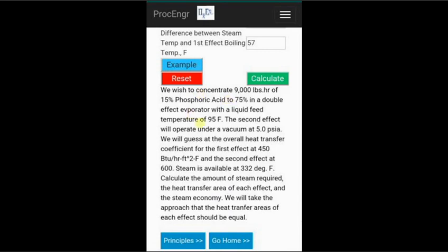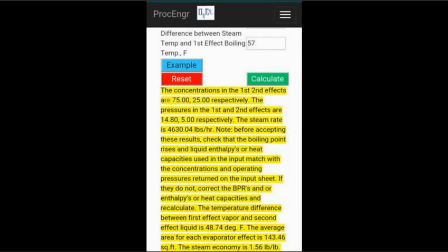Then, we will calculate and find that the concentration of acid from the second effect is 25%. This agrees with our assumption with the associated boiling point rise and heat capacity. If it deviated, we would adjust our assumption and calculate again until the results and assumptions converge.